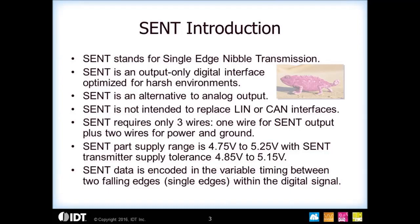There is one restriction on SENT: the power supply needs to be from 4.75 to 5.25 volts. The encoding scheme is variable timing between two falling edges, and we'll talk more about that in later slides.